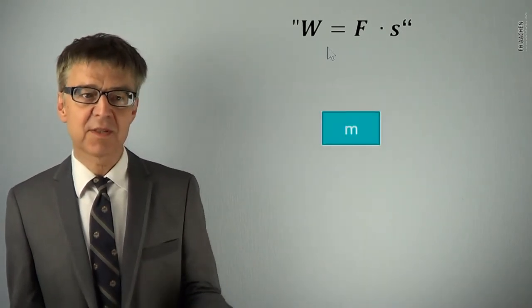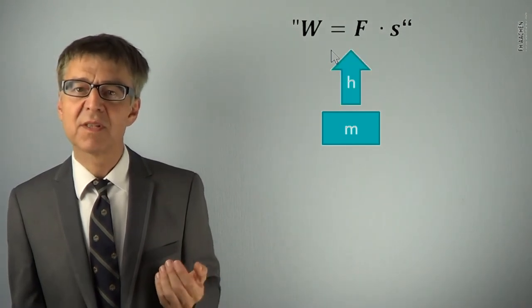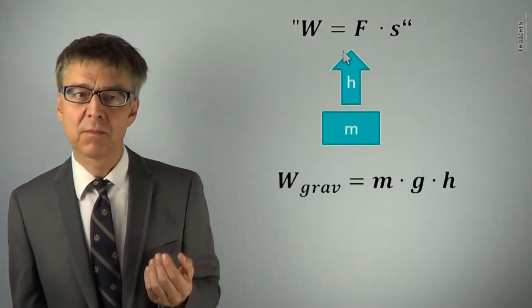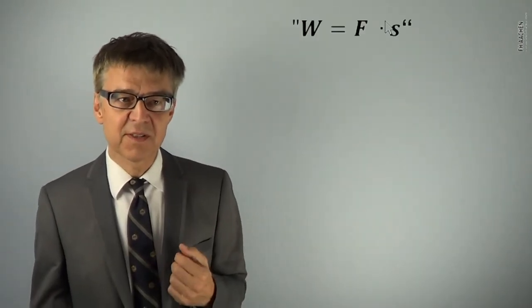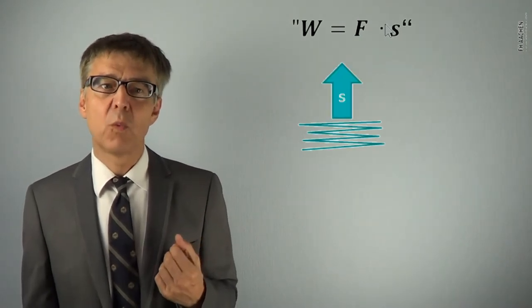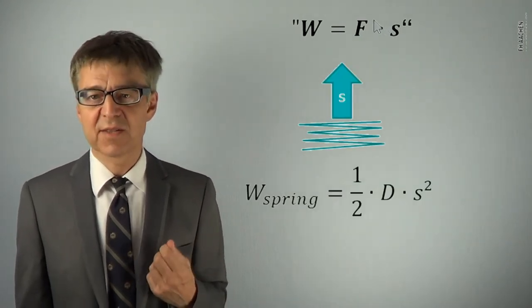Gravitational work is m times g times h. The stretching of a spring is slightly more complicated, because the force is not constant. The elastic work is one-half d times S squared.